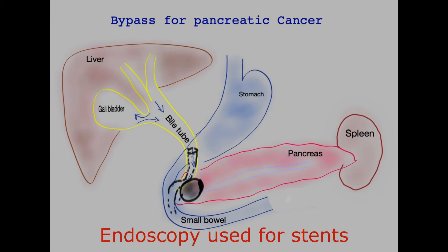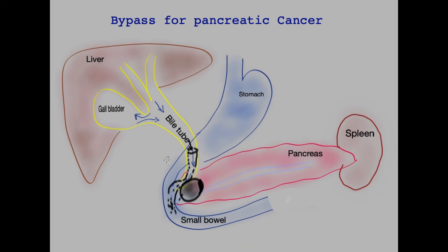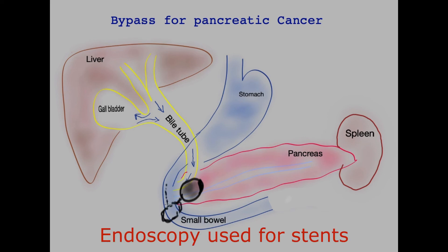Typically metal stents are placed in the bile tube if patients are jaundiced, and bile can then flow through them because these spring open the strictures caused by the tumour and bile drains into the small bowel. If a metal stent is already in place then it is much less likely for the surgeons to opt to perform a bypass with the bile tube. These metal stents have good patency rates. If pancreatic cancer patients develop obstruction of the small bowel and are not candidates for surgery, metal stents can be placed to spring open the small bowel, but these are not as durable as surgical bypass and are prone to complications and obstruction with bolus of food.